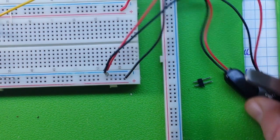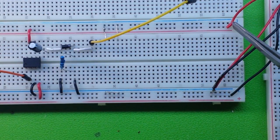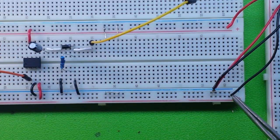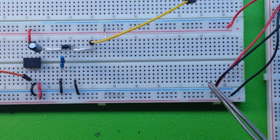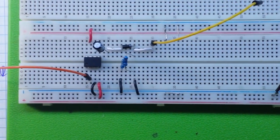So the positive from one battery is our V plus, the negative from the second battery is our V minus, and where those two meet in the middle is our common ground.